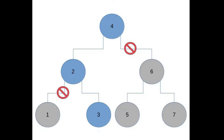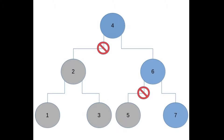If I were to look for the seven, I would always go to the right — is that correct? Exactly. For seven, you compare it with four; seven is bigger than four so you go right. You find the six, and seven is bigger than six so you go right again and find the seven. You ignore more than half of the tree — that's really powerful.